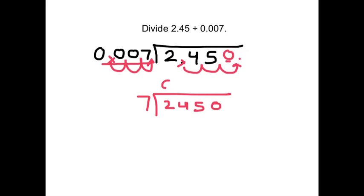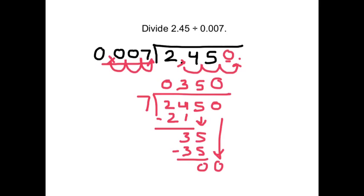7 doesn't go into 0, but it does go into 24 three times. Bring down the 5. 7 goes into 35 five times exactly. Bring down the 0. Bring down the last 0. 7 goes into 0 zero times. So the answer is 350.